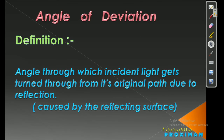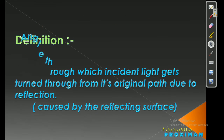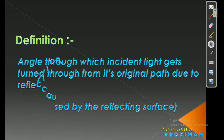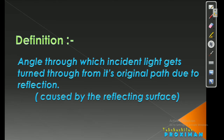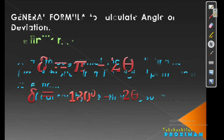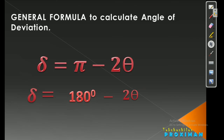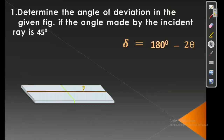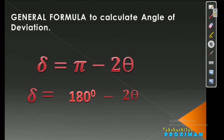Let us understand the definition of Angle of Deviation. It states: the angle through which incident light gets turned from its original horizontal path due to reflection caused by the reflecting surface. Without reflection, the ray would travel in a straight unidirectional path, but due to the reflecting surface it changes direction — that change, measured as an angle, is the Angle of Deviation. The general formula is δ = π − 2θ, where π is simply 180 degrees.